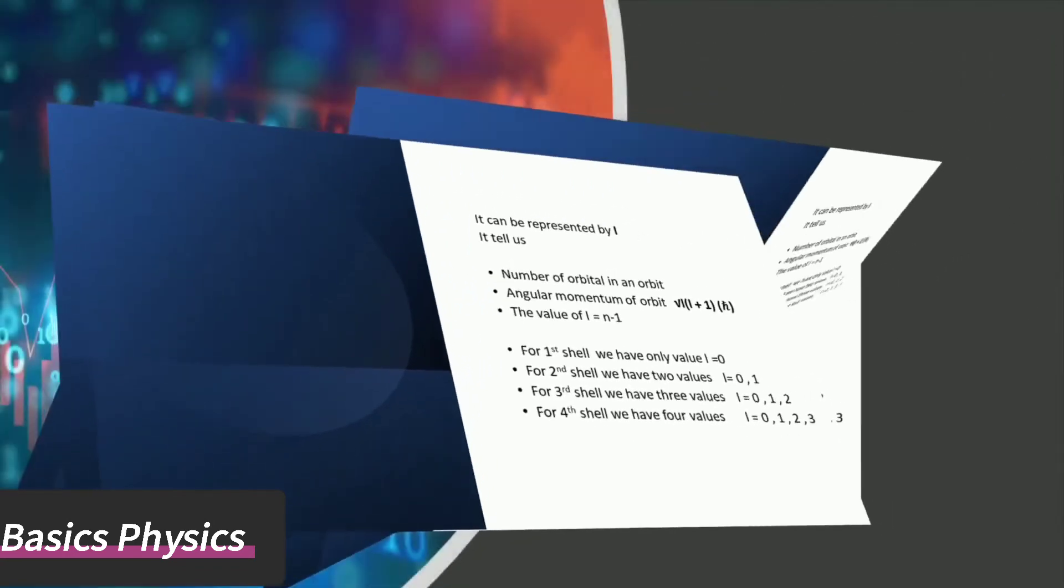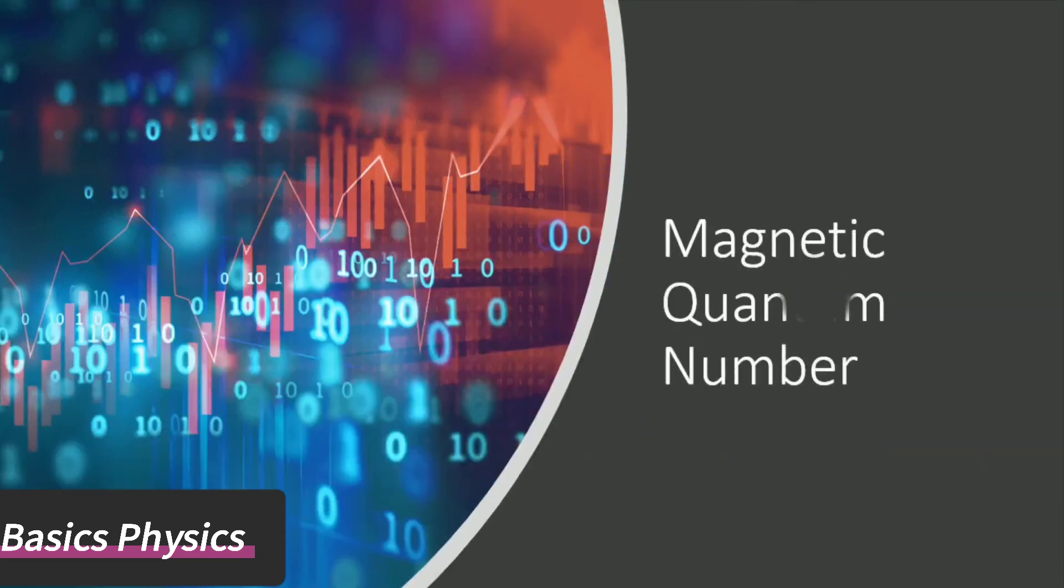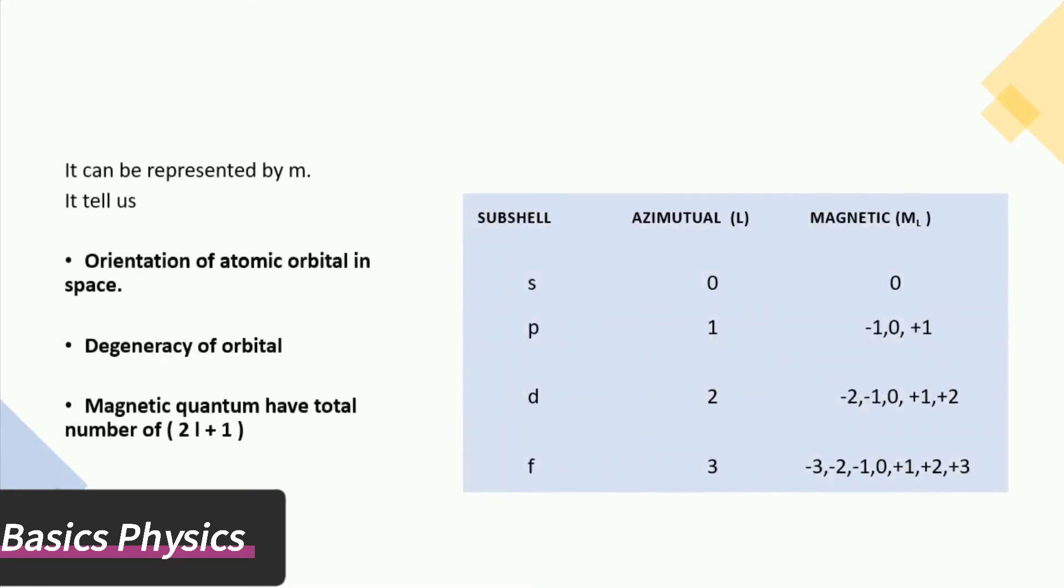Magnetic quantum number can be represented by m. It tells us the orientation of atomic orbitals in space and degeneracy of orbitals. Magnetic quantum number has a total number of 2l plus 1.